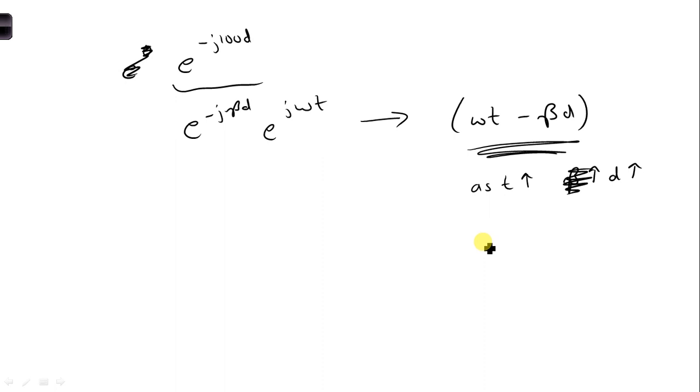So this represents a wave traveling towards the generator. Since in the D coordinate system, positive D goes to the left towards the generator.